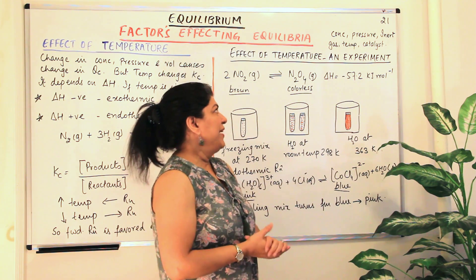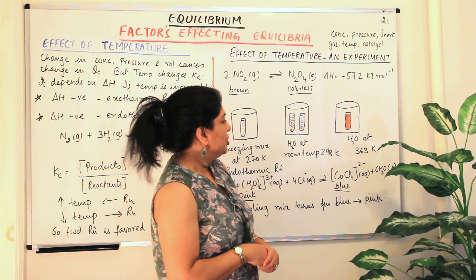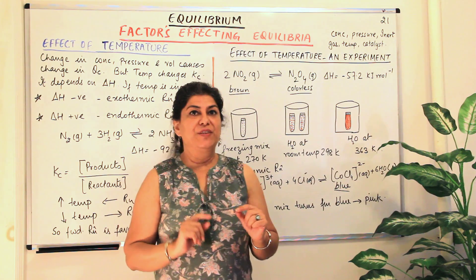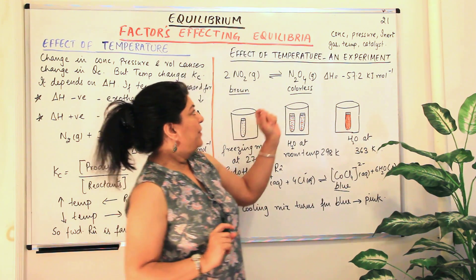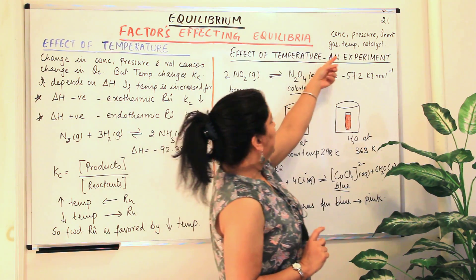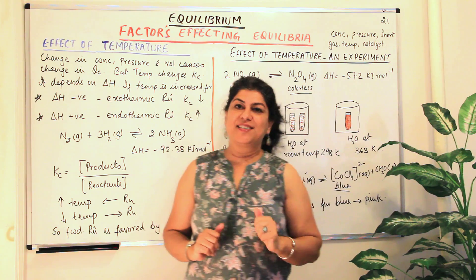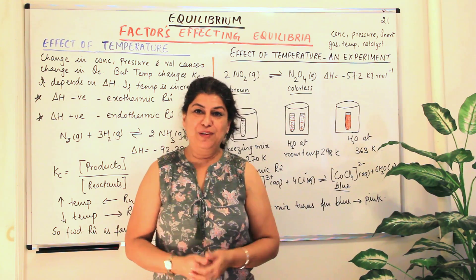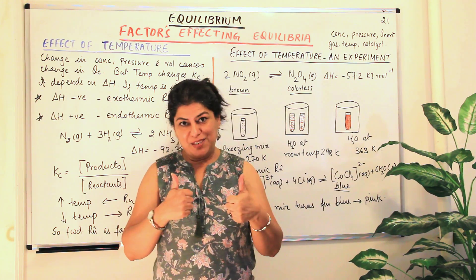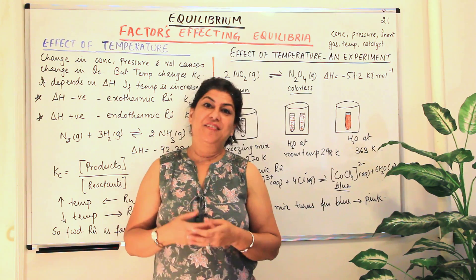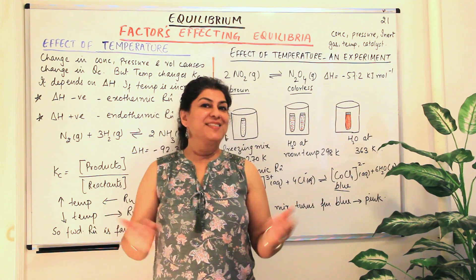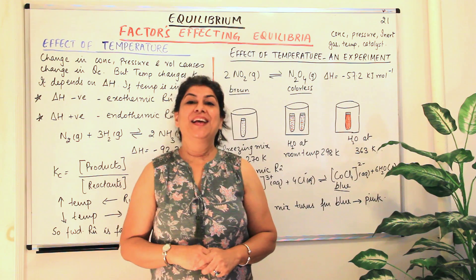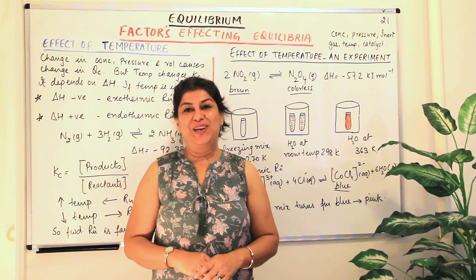So this was the effect of temperature on equilibrium. We are left with just one more factor that affects equilibrium, that is catalyst, and we will do that in the next video. If you found this helpful, please give it a thumbs up, subscribe to my channel, recommend it to your friends, and please keep returning for more videos on chemistry. Thank you for watching and bye-bye for now.